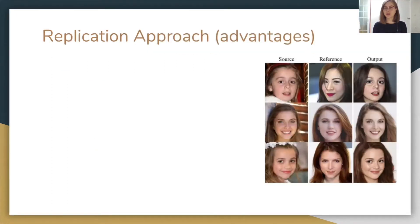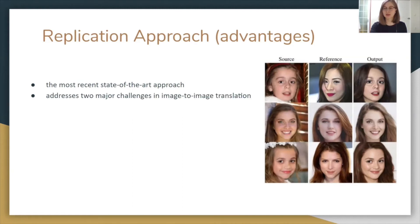Let us talk about the reasons why we chose this particular paper. First, it is the most recent state-of-the-art approach — it was accepted to CVPR 2020, and they released their dataset and code less than a week ago, so our team will be one of the first to replicate the paper. It also solves the two major problems mentioned before: diversity and multiple domain scalability. It also performs well on unseen data — the image on the right is from the FFHQ dataset it wasn't trained on, and StarGAN V2 still produces cohesive results.